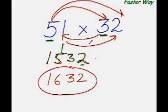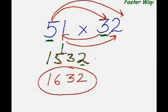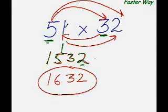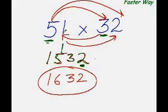Some things are easier said than done — this is one thing that's easier done than said. All you need to remember is this arrow pattern, and everything else will take care of itself. Multiply the first digit of this number with the first digit of the other number. Then multiply that first digit with the other digit, add the cross-product of the inner digits, and finally multiply the last digits of both numbers to get the last digit of your answer. So 1 times 2 is 2, and the answer is 1632.